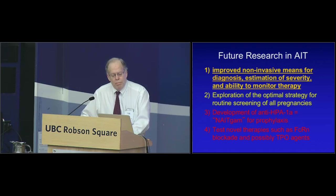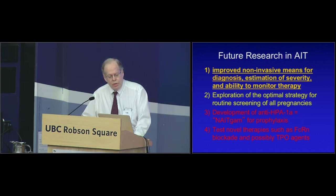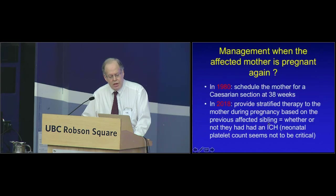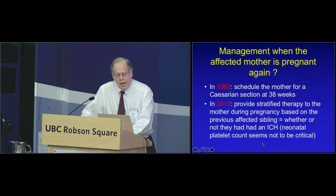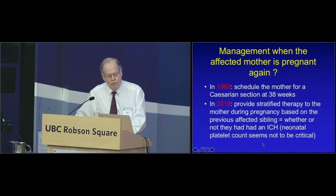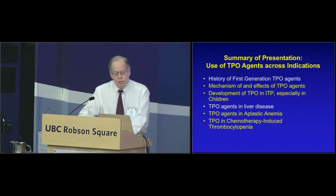Things that are needed: better non-invasive means of diagnosis beyond HPA1A incompatibility and widespread availability of cell-free fetal DNA for HPA1A typing; being able to estimate severity and monitor therapy the way you can in RH disease with MCA Dopplers; whether there really should be screening; development of anti-HPA1A analogous to RhoGAM; and possibly some other novel therapies coming along. In 1980 you'd schedule the mother for a C-section at 37 to 38 weeks. In 2018, we would provide stratified therapy depending on whether the previous affected sibling had had an ICH.